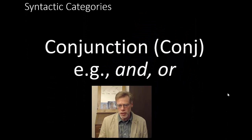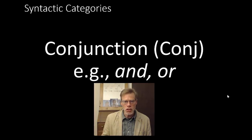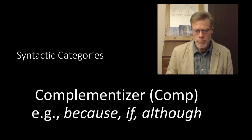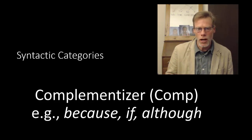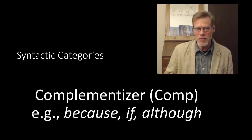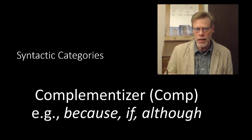Then there's conjunctions — our best two exemplars are and and or. There are others in English like nor, for, so, and but, but those are the best two. Then there's complementizer — that's the term linguists use; you might have been taught subordinating conjunctions. I hate that term because it suggests they behave similarly to conjunctions, which simply isn't true — syntactically, they act very differently. Examples are because, if, although.